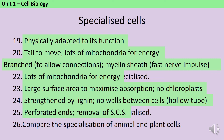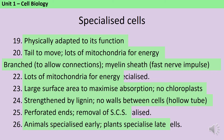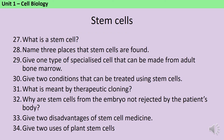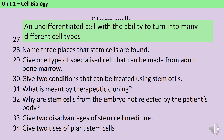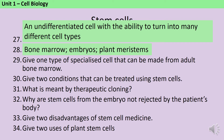Animal cells specialise very early and then can only be that one cell type, whereas plant cells specialise much later. Stem cells are undifferentiated cells with the ability to turn into many different cell types. They are found in adult bone marrow, in embryos and in plant meristems. Bone marrow cells can differentiate into both red blood cells and white blood cells.